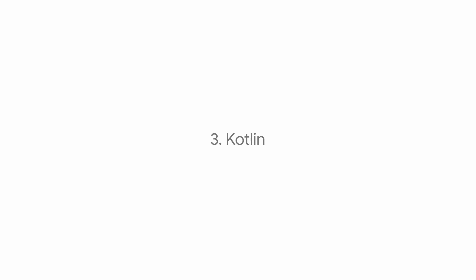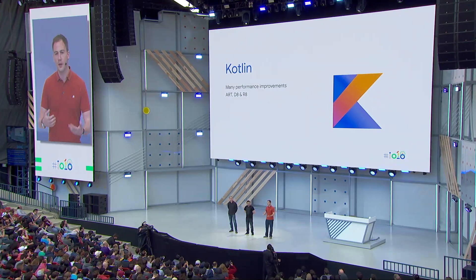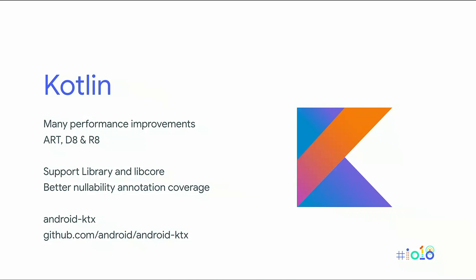Kotlin — it's this little thing we announced last year. We want to make it better for all the Kotlin developers out there. Some of the things we've been doing: the R team has been really busy with D8, R8, and R itself. They've been looking at the bytecode generated by the Kotlin compiler, analyzing bytecode patterns different from those generated by the Java compiler, and optimizing for those patterns. We've also been adding a lot of nullability annotations to our Java APIs, both in the core libraries (LibCore) and our support libraries, to make it easier to use platform APIs in Kotlin. We launched on GitHub a new library called Android KTX — a set of Kotlin extensions for existing platform APIs — to take advantage of Kotlin language features and make existing APIs easier to use.